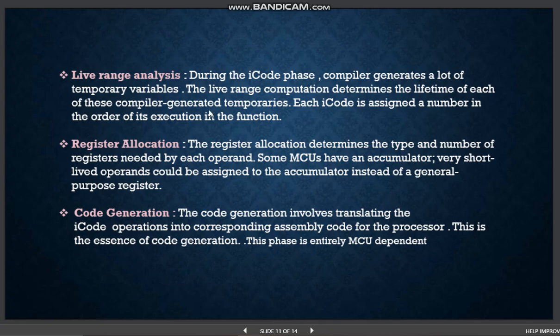During the intermediate code generation phase, the compiler assumes the target machine has an infinite number of registers and generates many temporary variables. The live range computation determines the lifetime of each of these compiler-generated temporaries. Each i-code is assigned a number in order of its execution in the function. Live range analysis is essential for register allocation, since this computation determines which iTemps will be assigned to registers.